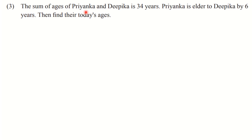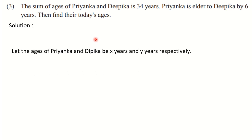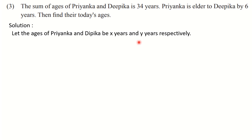The third question is: the sum of ages of Priyanka and Deepika is 34 years. Priyanka is older than Deepika by 6 years — find their today's ages. After reading the question, the first condition is the sum of ages is 34 years, and the second condition is Priyanka is elder to Deepika by 6 years. We have to assign variables to the two quantities: Priyanka's age and Deepika's age. So let the ages of Priyanka and Deepika be X years and Y years respectively.